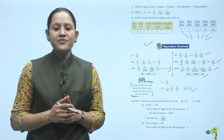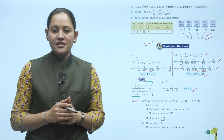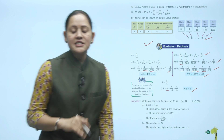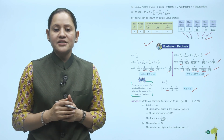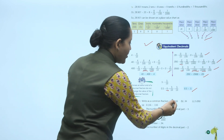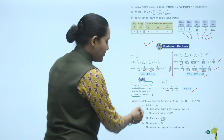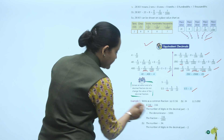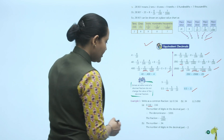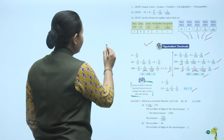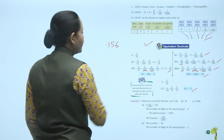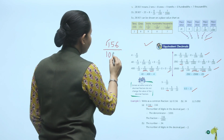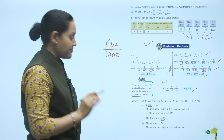Zero at either end of a decimal fraction does not change its value. No matter how many zeros we add after the last digit, the value remains the same. Example — write as a common fraction: 0.156 has 3 digits in the decimal part, so the denominator is 1000. Removing the decimal gives 156, so 0.156 equals 156 upon 1000. 0.34 has 2 decimal digits, denominator is 100, so it equals 34 upon 100.